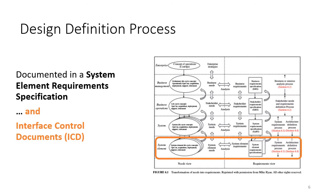To put things in context, the output of the design definition process is a system element requirement specification, shown on the fourth tier of diagram 4.1. We go from business requirement specification to stakeholder requirement specification to system requirement specification, and all of that is used to generate the system element requirement specification. One thing not mentioned in the INCOSI Handbook is that a big part of this architecture and design process is to establish the interfaces between components, captured in the interface control document known as the ICD.